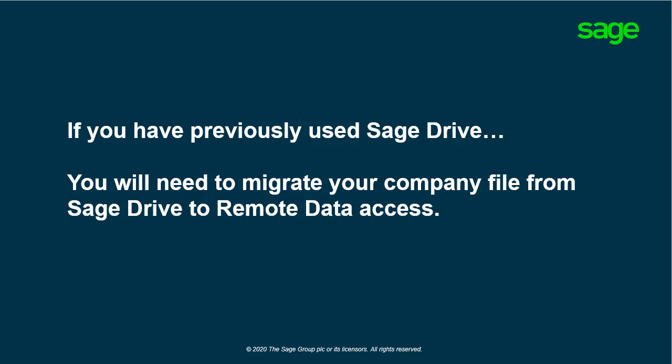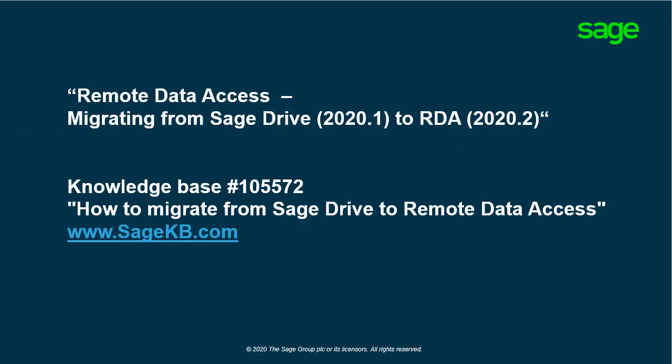If you've previously used Sage Drive and Sage 50 Accounting Canadian Edition 2020.1 or earlier, you will need to migrate your company file from Sage Drive to Remote Data Access. Migration steps are outlined in the video entitled 'Remote Data Access: Migrating from Sage Drive 2020.1 to Remote Data Access 2020.2', which can be accessed from the notes section below this video or via Knowledge Base article number 105572, 'How to Migrate from Sage Drive to Remote Data Access'.